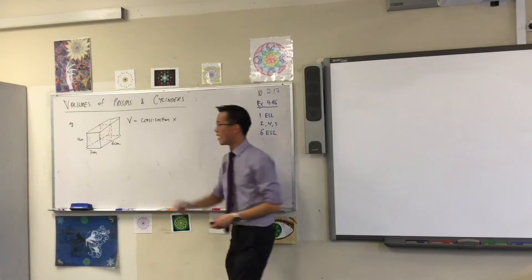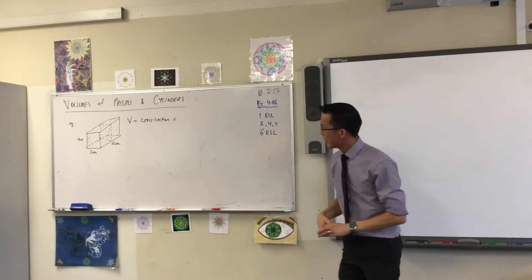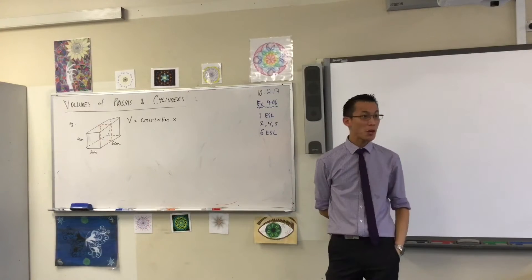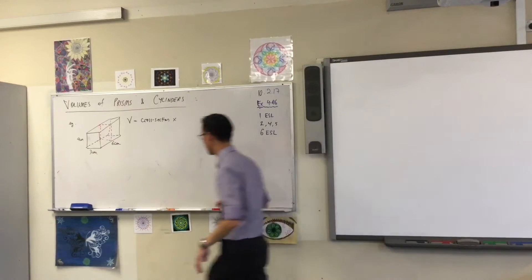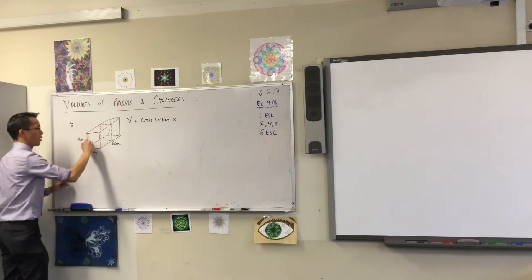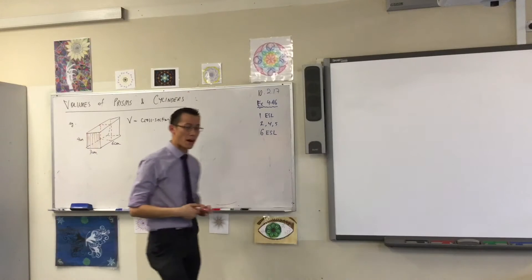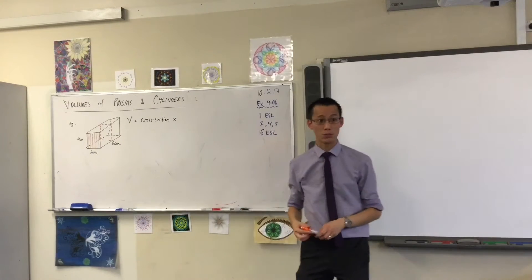What you multiply that by, the cross section here. If we call it that 4 by 3 on the front. So let me just color that in. If I call this the cross section, what would I multiply that by in terms of numbers to get the volume?